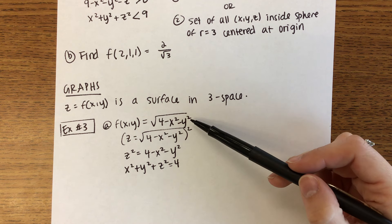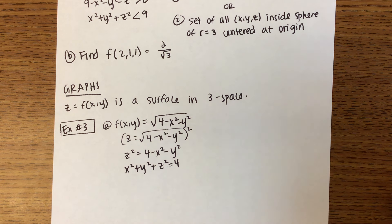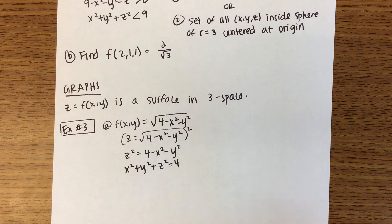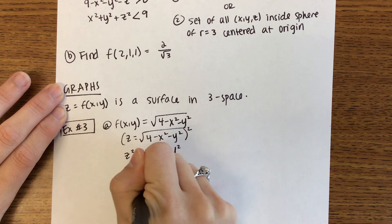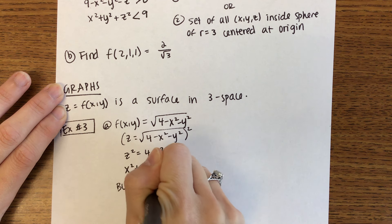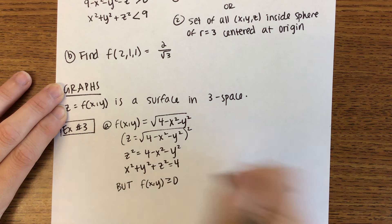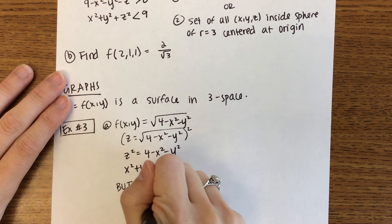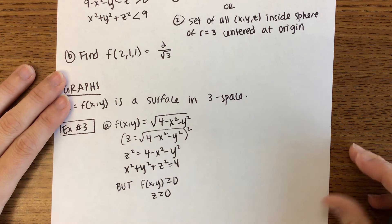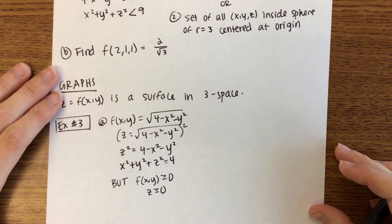That is not what our initial surface is though. f of x, y has to be at least zero because it's a square root, so z has to be at least zero. Rather than a full sphere, we have a hemisphere — just the positive z side of the sphere.